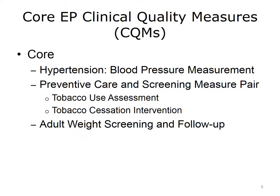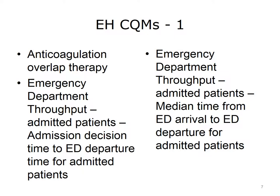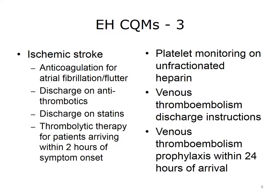This slide shows the core CQMs for eligible professionals. There were three core and three alternatives that could be used if the core measures could not be measured. The core measures included blood pressure measurement, tobacco use screening and cessation intervention, and adult weight screening and follow-up. The alternatives were weight assessment and counseling for children and adolescents, influenza immunization, and childhood immunization status. There were also an additional 38 measures for eligible professionals, of which three needed to be measured. The next two slides show the CQMs for eligible hospitals in the 2011 Meaningful Use Rules, and each hospital needed to report on all 15 of these measures to achieve meaningful use.